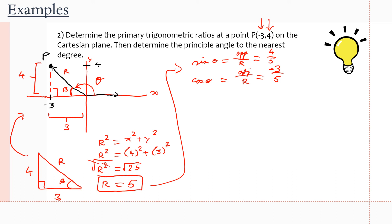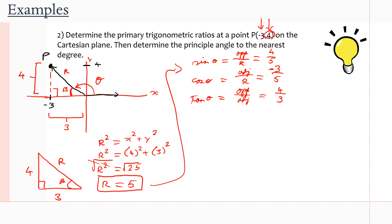Finally, we have tan of theta, which is opposite over adjacent. Opposite of beta is four, adjacent of beta is three. Our y-coordinate is positive so four stays positive, but our x-coordinate is negative so three becomes negative. So tan of theta equals negative four over three. Those are our three primary trigonometric ratios.